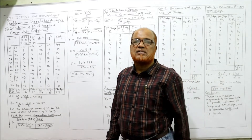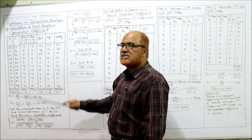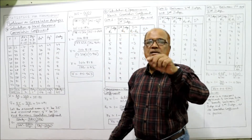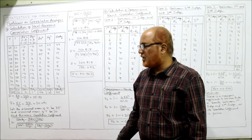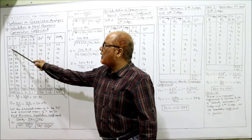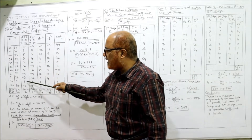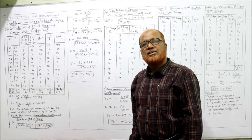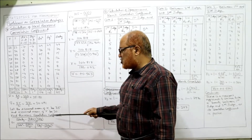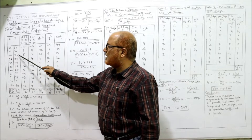The columns we require are: dx, dy, dx², dy², and dx·dy. dx = x minus A, where A is the assumed mean 35. So: 28−35, 41−35, 40−35, and so on — giving summation dx = 2. Similarly, dy = y minus A, where A = 30: 23−30, 34−30, 33−30, and so on — giving summation dy = 1.